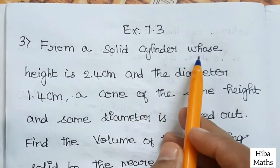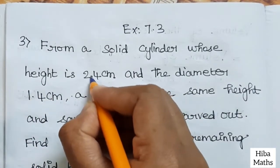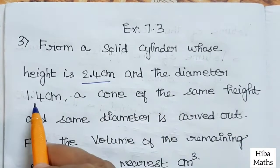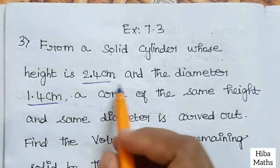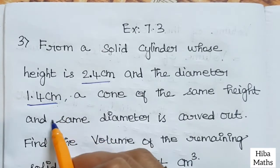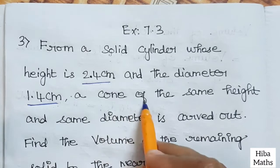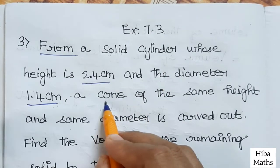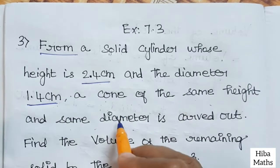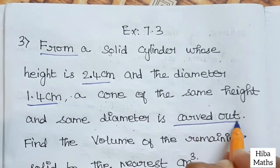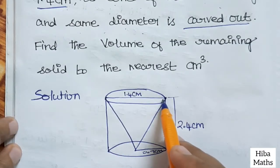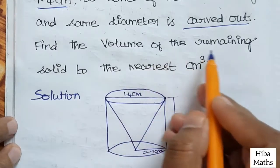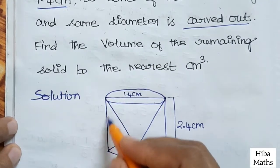From a solid cylinder whose height is 2.4 cm and diameter is 1.4 cm, a cone of the same height and same diameter is carved out. Find the volume of the remaining solid to the nearest cm³.